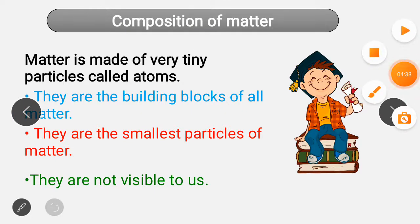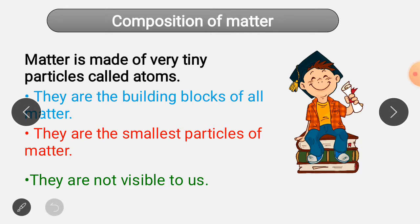The next topic is composition of matter — how matter is made. Matter is made of very tiny particles called atoms. Atoms are the building blocks of all matter. They are the smallest particles of matter. Atoms are not visible to us; you cannot see atoms with the naked eye.